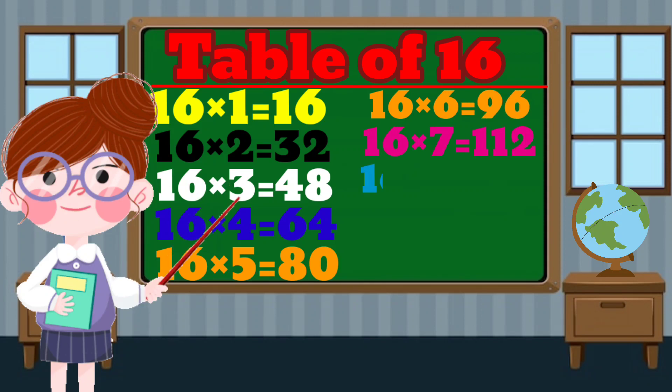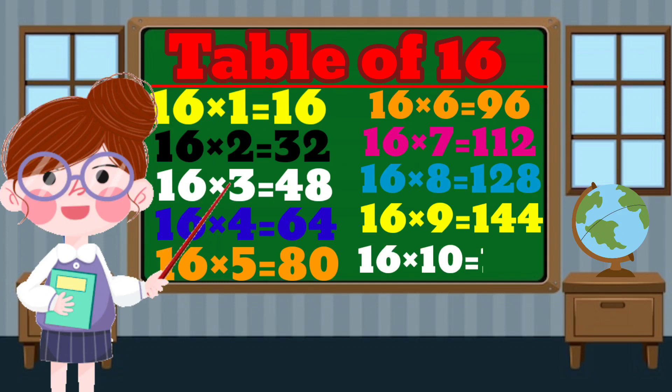16 times 6 equals 96. 16 times 7 equals 112. 16 times 8 equals 128. 16 times 9 equals 144. 16 times 10 equals 160.